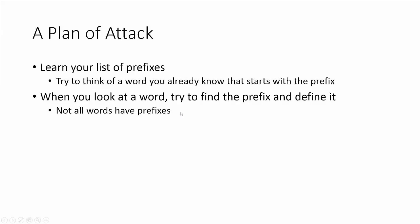So when you're going about learning your prefixes. Here's a plan of attack. The first thing you should do is memorize your list of prefixes. When you do, try to think of a word that you already know that starts with the prefix. Such as bicycle. You knew bicycle was two wheels. Therefore you knew bi meant two. When you try to look at a word, a new word they give you. Try to look at it and just find the prefix and just define the prefix. But keep in mind, not all words have a prefix.